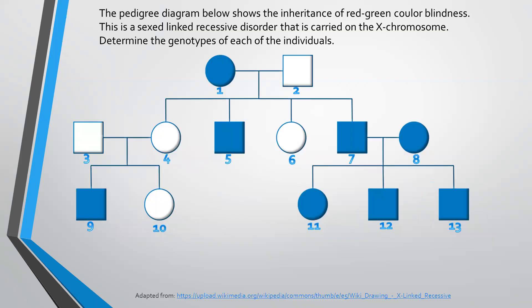Here's an example. It says that we're looking at the inheritance of red-green colorblindness, which is a sex-linked recessive disorder that's carried on the X chromosome. We are tasked with determining the genotypes of the 13 individuals that are shown here.